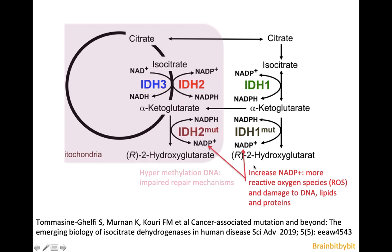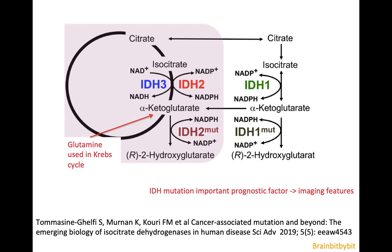Using specialized spectroscopy, 2-hydroxyglutarate can be demonstrated in the tumor, but because specialized spectroscopy is required, it is not very widespread. Finally, because ketoglutarate is being converted to hydroxyglutarate, there is a ketoglutarate deficit in the Krebs cycle, so instead the cell starts to use glutamine, which further disturbs the metabolism.